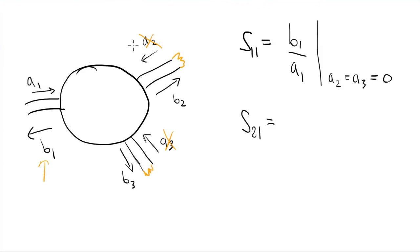For S21, we do something similar. What we care about is what comes out of port 2 and what comes into port 1. So in this case, we terminate the ports that we're not driving. And we have B2 over A1 while making sure that the other ports that are not driven are not driven.